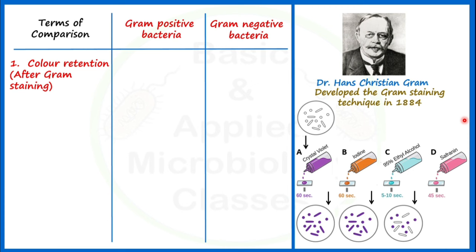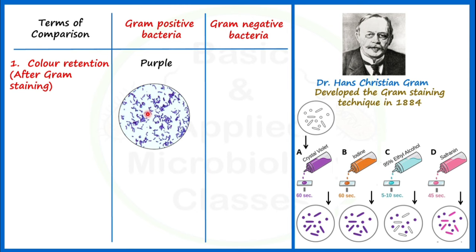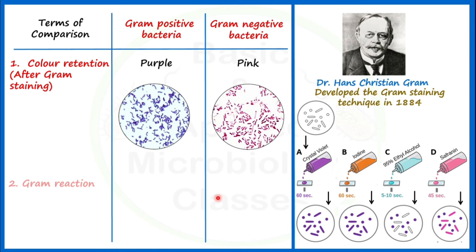Now, bacteria which take the purple color are called gram positive bacteria. Bacteria which take the color of the counter stain safranine and appear pinkish in color are called gram negative bacteria. Let's see the second point of difference: gram reaction.